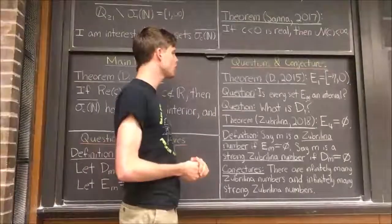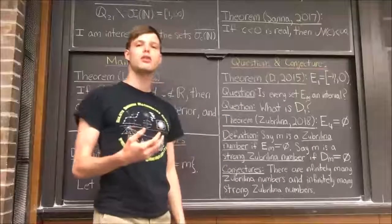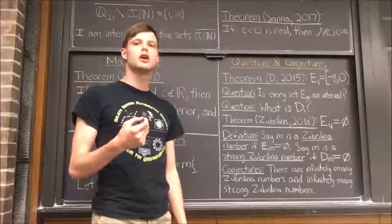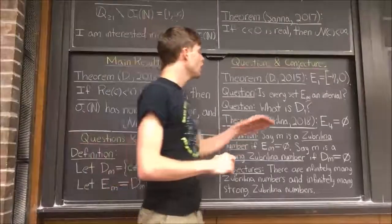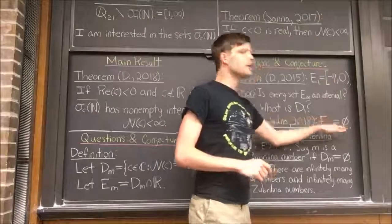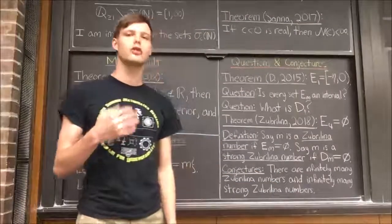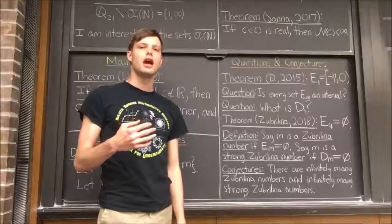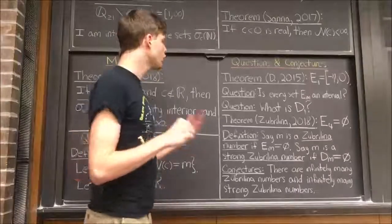Finally, I want to mention some recent work of Nina Zubrilina. She's obtained asymptotic estimates for the numbers n(c) when c is a negative real number. She also proved that the set E_4 is empty. This means that there are no real numbers c such that the closure of the range of σ_c has exactly four connected components.